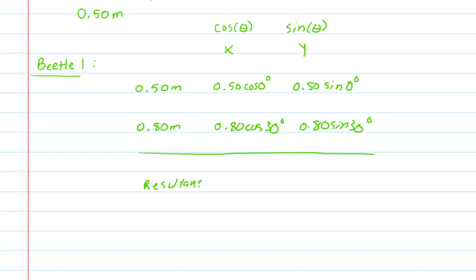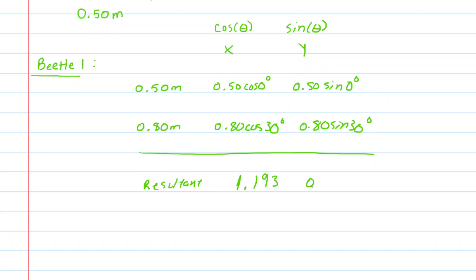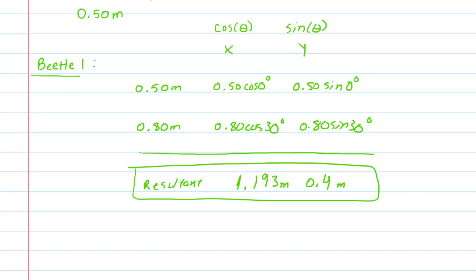Pick up a calculator and add these two components together. For the x component you should get approximately 1.193, and when you add the two y components together you should get exactly 0.4. These are in meters. This is the resultant vector of Beetle 1's motion, so we'll box this in and come back to it momentarily. We'd like to look at Beetle 2's motion next in a chart.